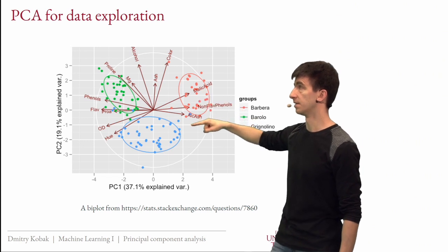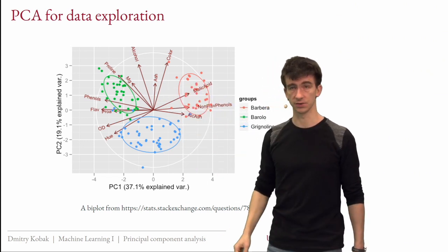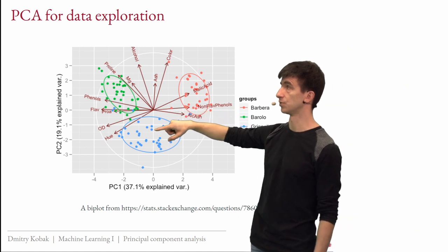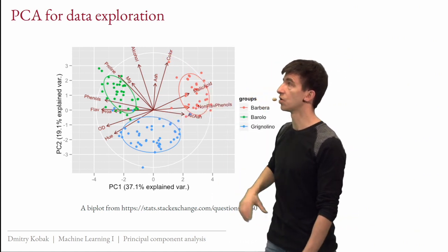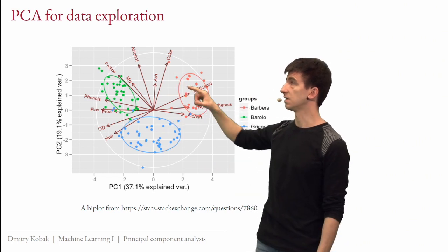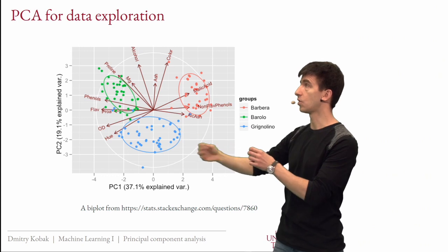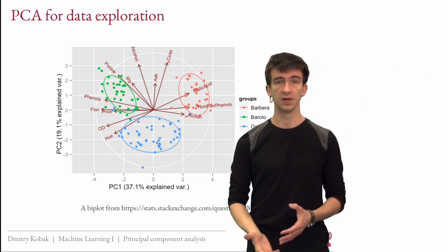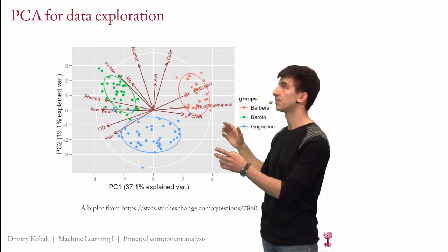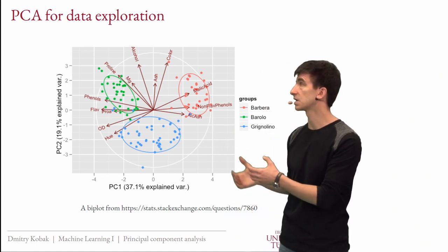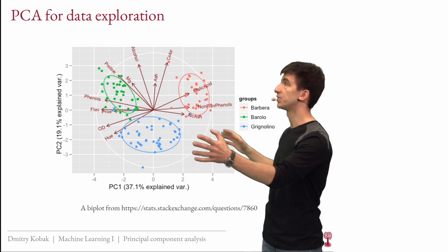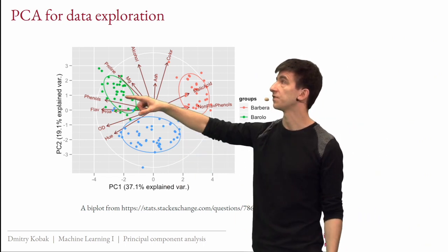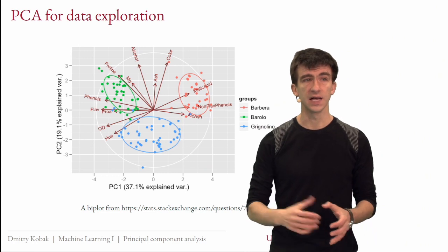By looking at the longest arrows, you can identify which original features drive PC1 and PC2, helping you interpret what those components represent. For example, PC1 might be associated with phenol levels in the wines. This kind of biplot helps you understand the largest mode of variation in your data and link it back to interpretable original features.